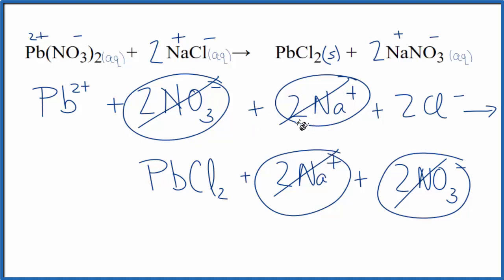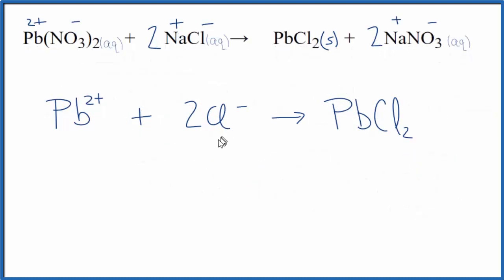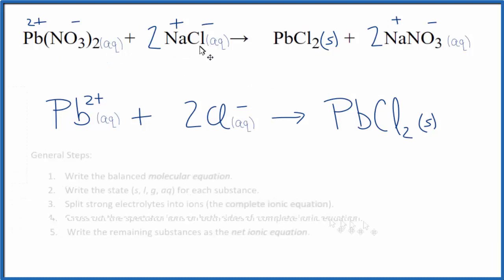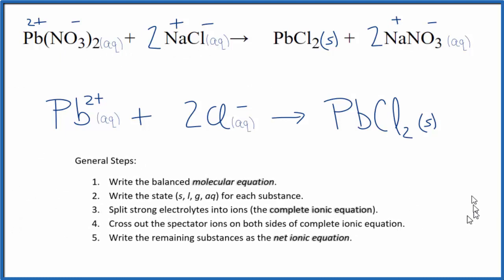So let's clean this up and remove all the spectator ions. Finally we can add the states in, and this is our net ionic equation for Pb(NO3)2 plus NaCl. These are the rules we followed, and this is Dr. B, thanks for watching.